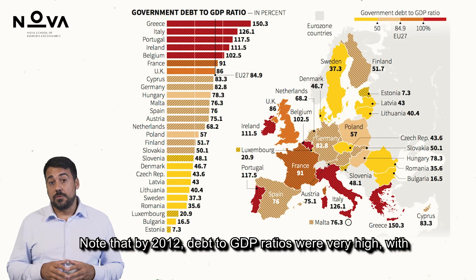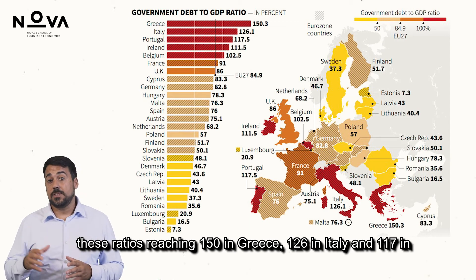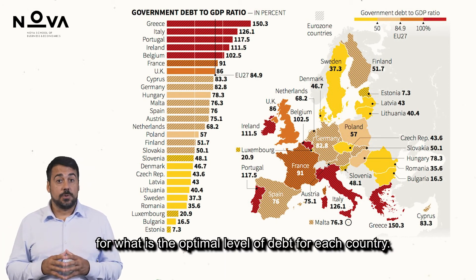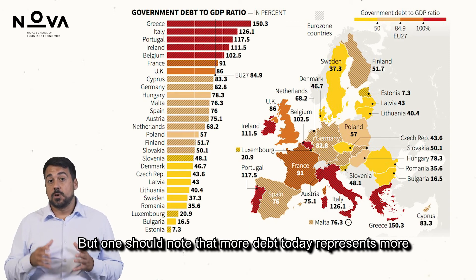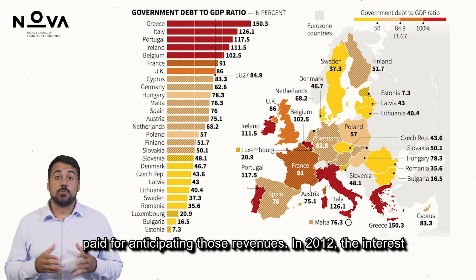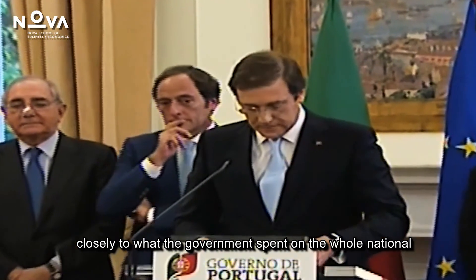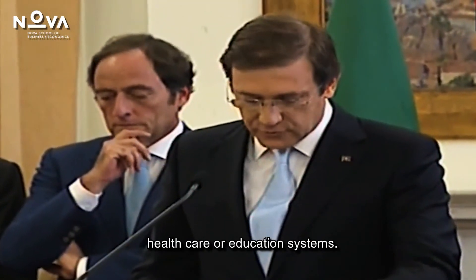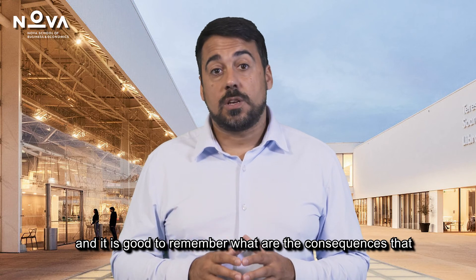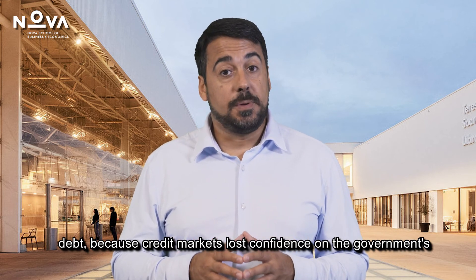By 2012, debt-to-GDP ratios were very high, reaching 150 in Greece, 126 in Italy, and 117 in Portugal. We are not going to argue on the basis of theory about what is the optimal level of debt for each country, but one should note that more debt today represents more taxes tomorrow. In particular, the interest paid on debt represents the price paid for anticipating those revenues.